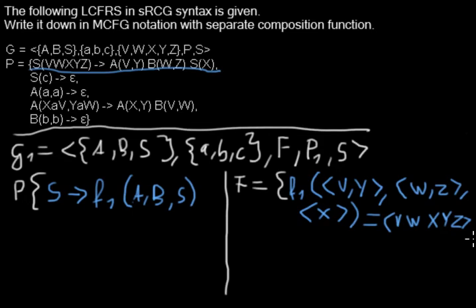So that's now the same production rule as this one, now written in MCFG notation. So let's take the next rule. This one becomes a new production rule: S expands to, and then now I name this function f2.